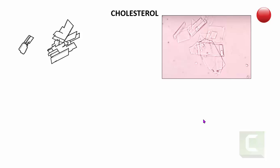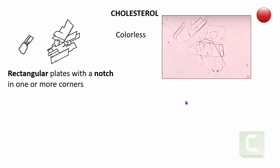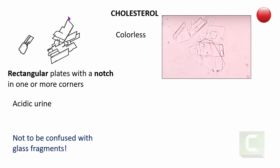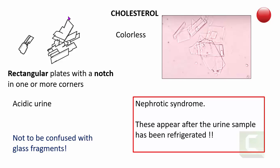The next pathological crystal is the cholesterol crystal, which is also colorless. In contrast to the hexagonal shape of cysteine crystals, cholesterol crystals are rectangular plates with notches in one or more corners. They are found in acidic urine. Do not confuse them with glass fragments. They are almost always found in nephrotic syndrome, where there is massive proteinuria along with extensive lipiduria. Interestingly, cholesterol crystals appear more when the sample has been refrigerated, though they can also be found in unrefrigerated samples.